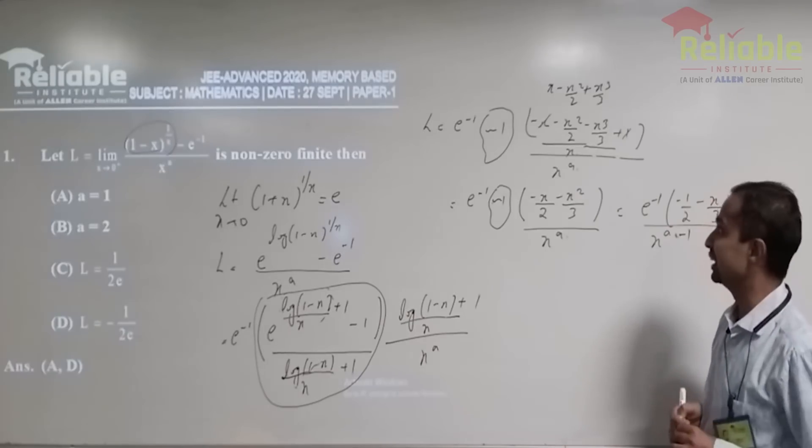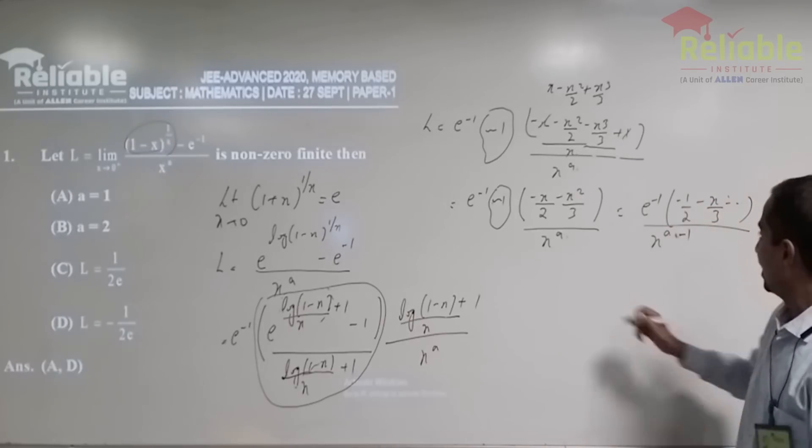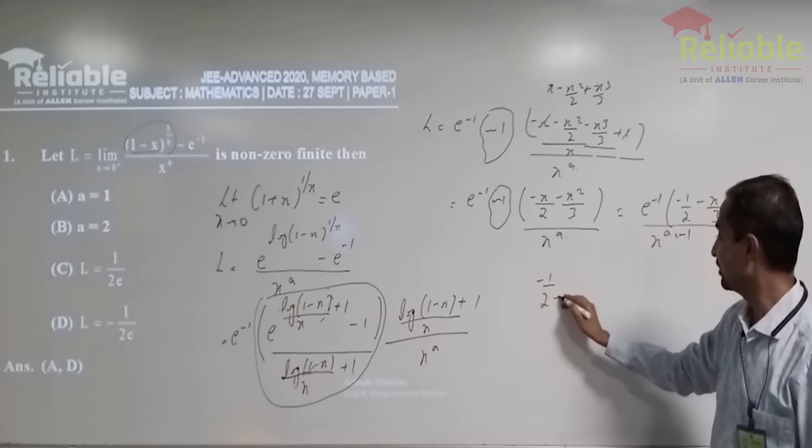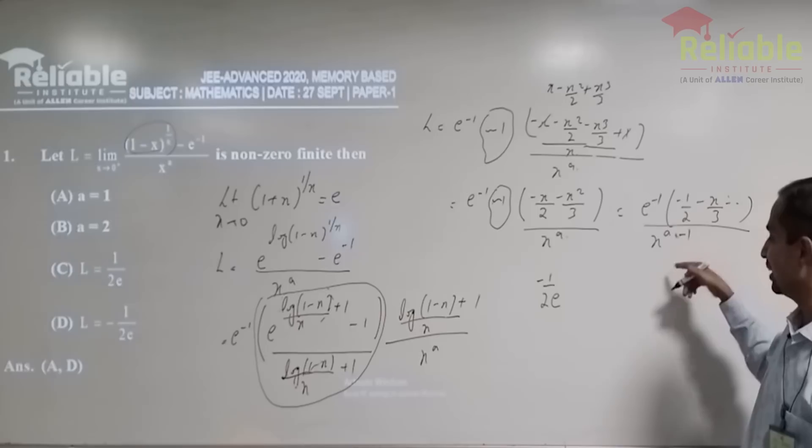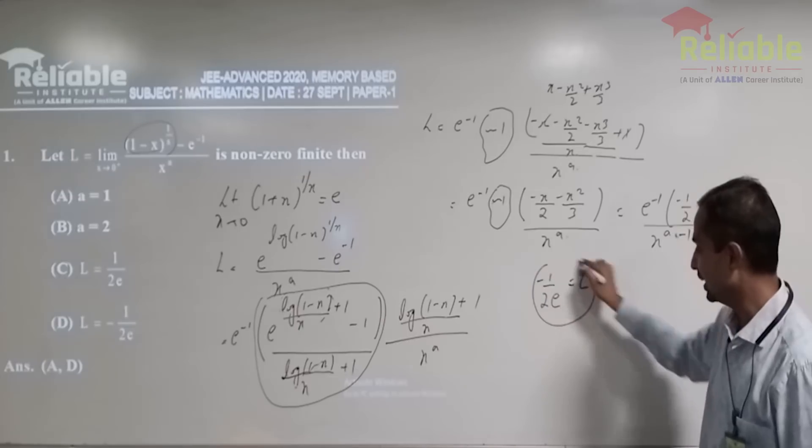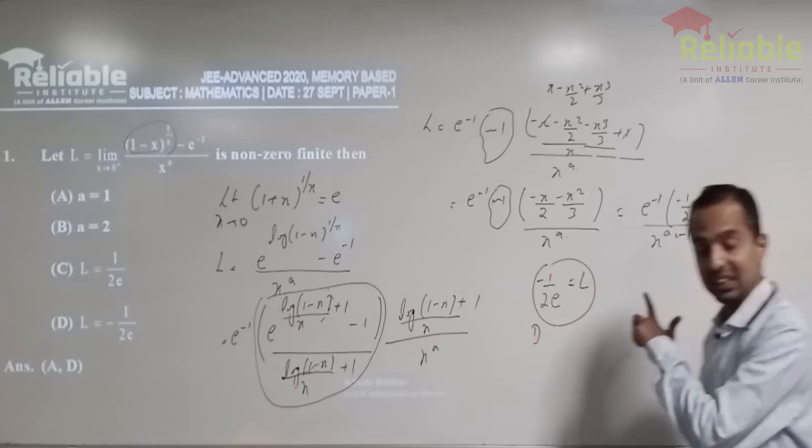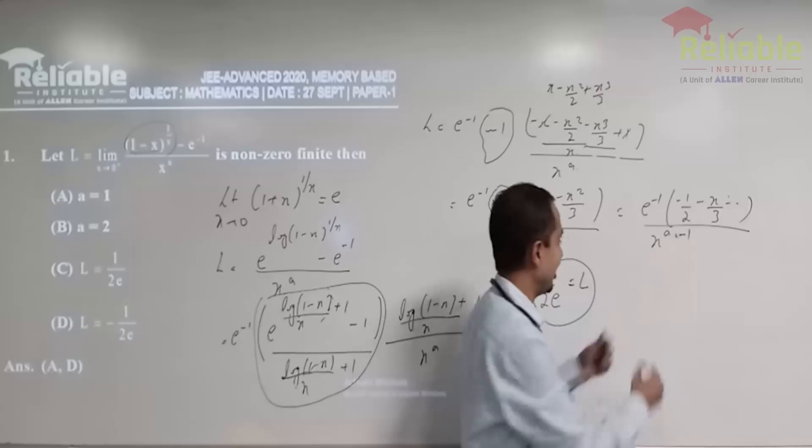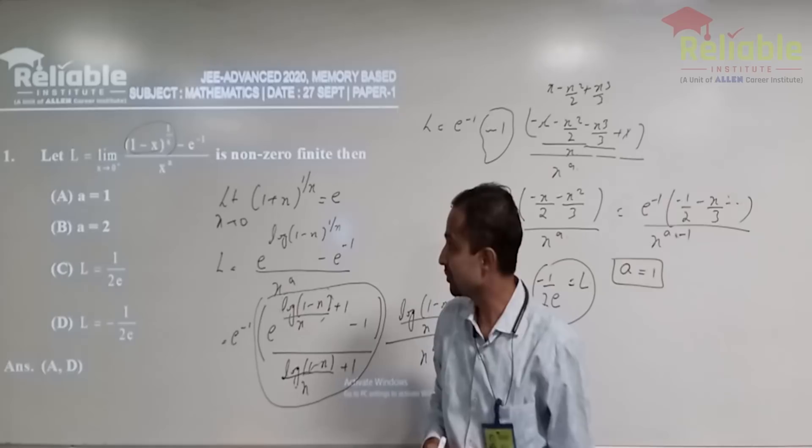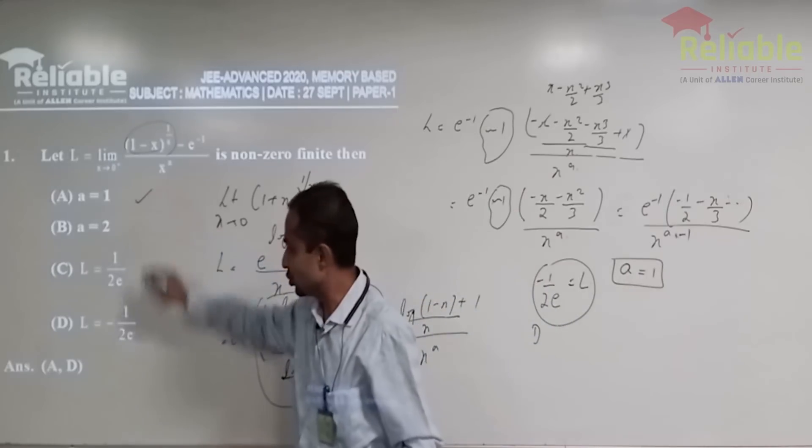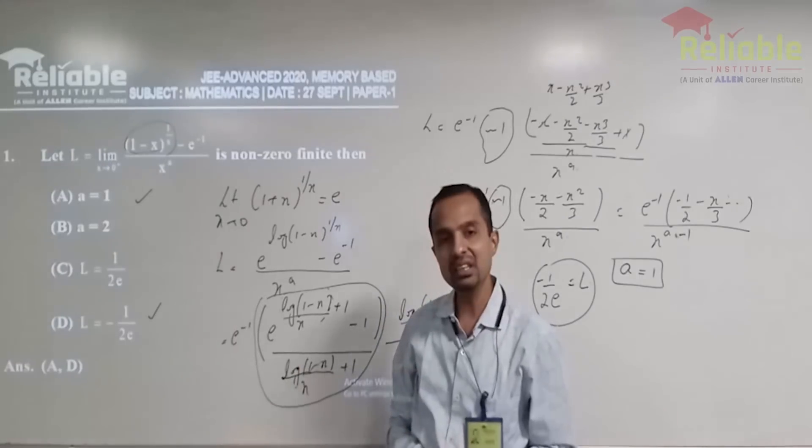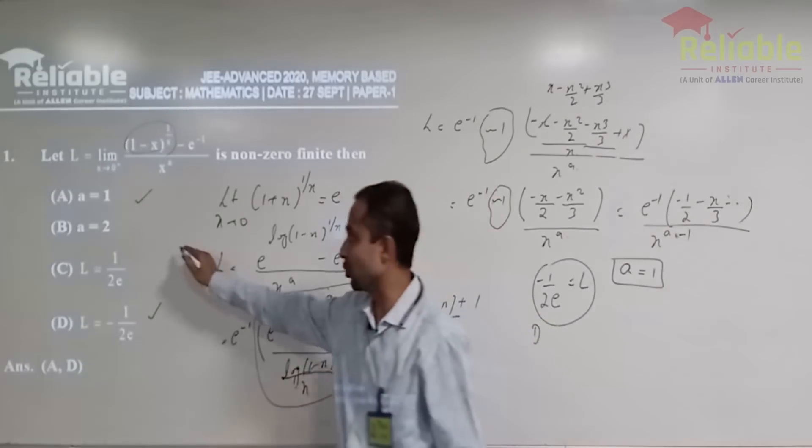So essentially, what we are left with is the limit is minus half by e. This is the limit, that's your l and that's your d choice. And for the limit to exist here, this should get vanished. So a is equal to 1 and that's your first choice. So a and d are the correct options. And as per me, I will rate this problem as a moderate one.